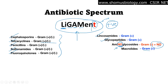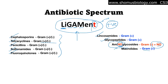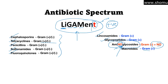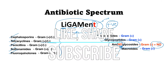So to recap: LIGAMENT antibiotics are against gram positive only, except Aminoglycosides — and you remember that because there's a 'no' in aminoglycoside, meaning no against gram positive. That's the only thing you need to remember and you can easily figure it out. If you like this video, please hit the like button, share it with your friends, and subscribe to this channel for more videos. Thank you, bye.